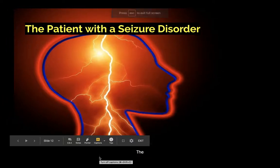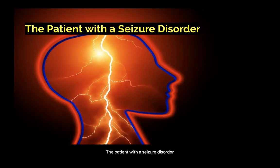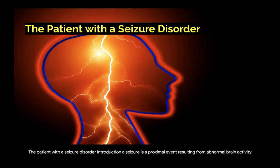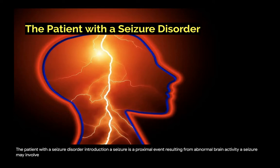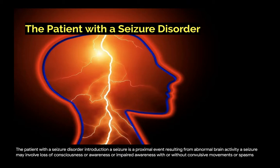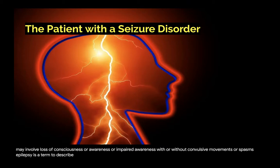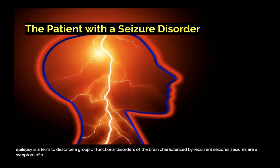A seizure is a proximal event resulting from abnormal brain activity. A seizure may involve loss of consciousness or awareness, or impaired awareness, with or without convulsive movements or spasms. Epilepsy is a term to describe a group of functional disorders of the brain characterized by recurrent seizures. Seizures are a symptom of epilepsy.